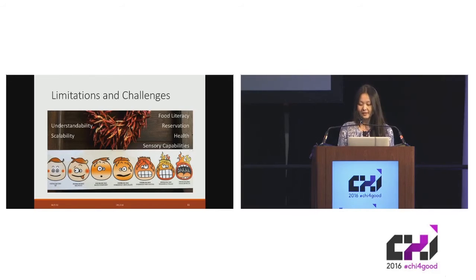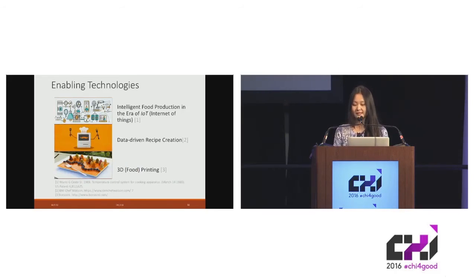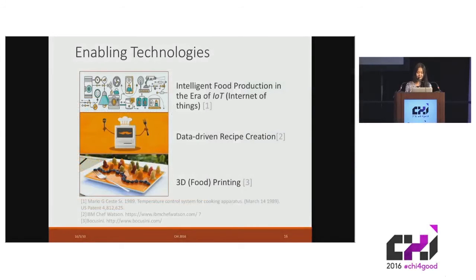However, with the development of enabling technologies, edibilization has the potential to break these constraints and have wider applications. One such technology is intelligent food production, such as automatic food appliances. Another breakthrough can come from data-driven recipe creation — for example, IBM Chef Watson extracted food pairing principles and created new recipes using AI and machine learning. Additionally, 3D printing can create cooking tools, utensils, and tailored meals for edibilization designs.